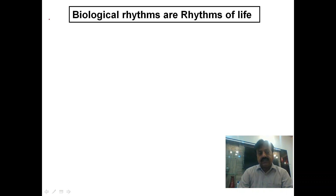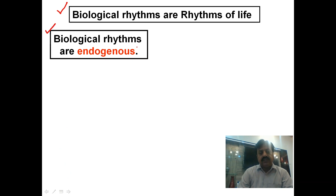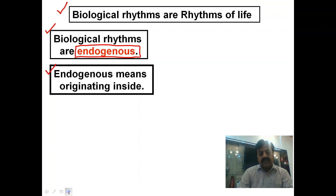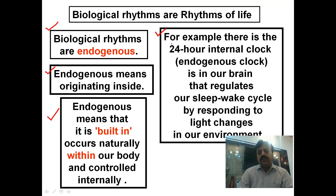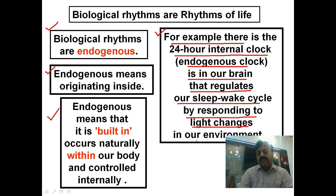Now, how are these endogenous rhythms? Biological rhythms are rhythms of life. Remember, biological rhythms are endogenous — it means they are controlled internally. The internal clock is inside our body. Endogenous means originating inside, built in, occurring naturally within our body and controlled internally by an internal clock. For example, there is a 24-hour internal clock — an endogenous clock in our brain that regulates our sleep cycle by responding to light changes in our environment.